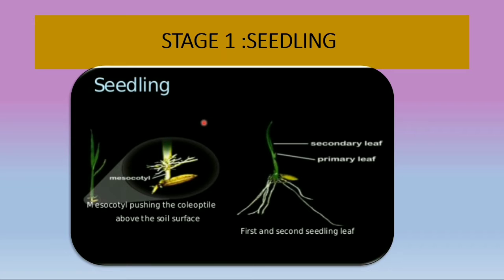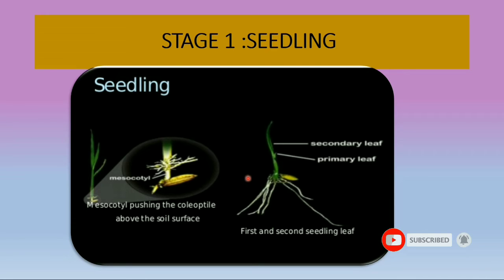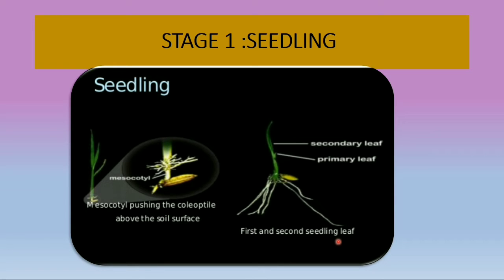In the seedling stage, leaves continue to develop at the rate of every three to four days. During the early stage, the secondary adventitious roots replace the temporary radical. A 20 to 25 day old seedling is ready for transplanting. You can observe in the image the mesocotyl pushing the coleoptile above the soil surface, and the first and second seedling leaves.